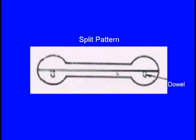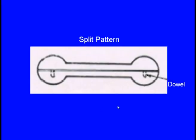For the dumbbell, this is the cope pattern and this is the drag pattern. Initially we put the drag pattern in the drag box and compact the molding sand, then make it upside down. We carefully place the cope pattern over the drag pattern — there should be no misalignment. To prevent misalignment, we use dowel pins: the drag box has holes and the cope pattern has pins, ensuring the pins rest in the holes. The dumbbell is manufactured by metal casting using the split piece pattern.